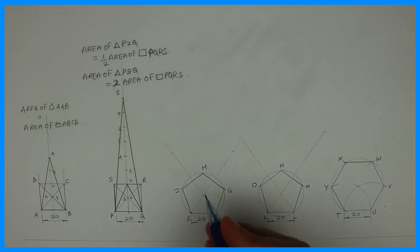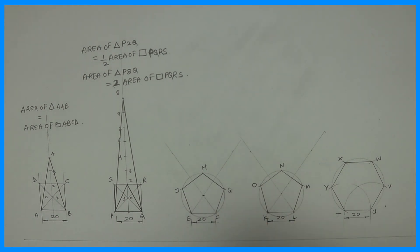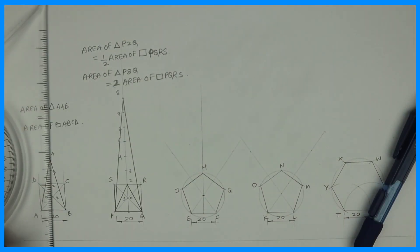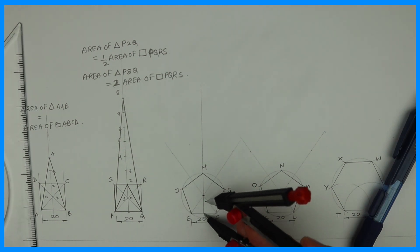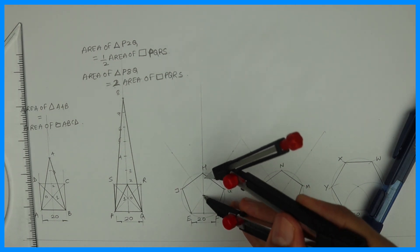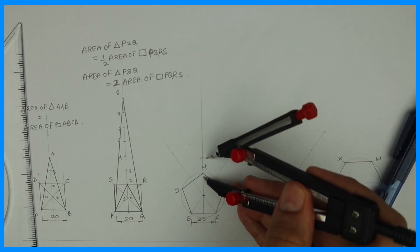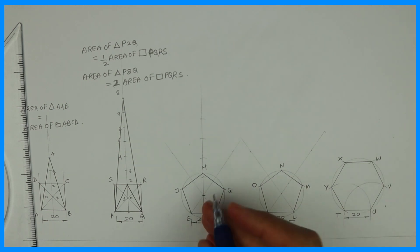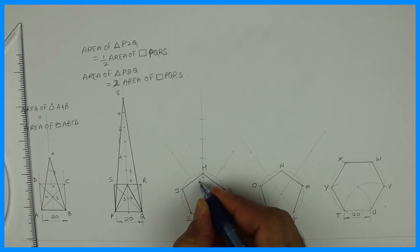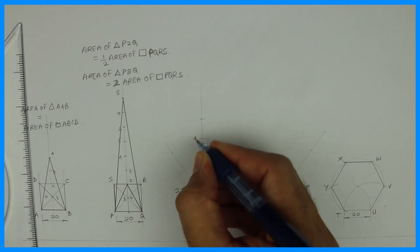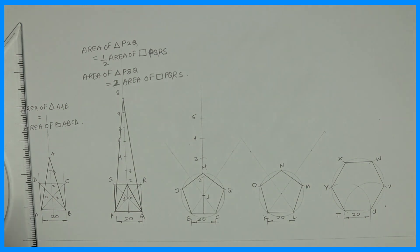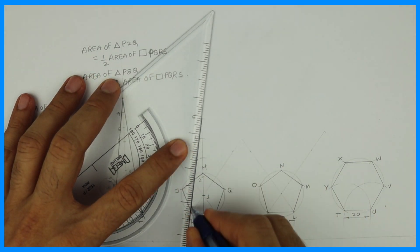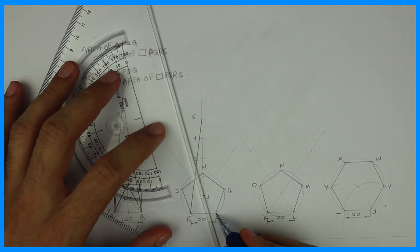Now we'll see pentagon. Pentagon is made up of how many triangles? Five triangles. So I'll take the height five times: one, two, three, four, five.